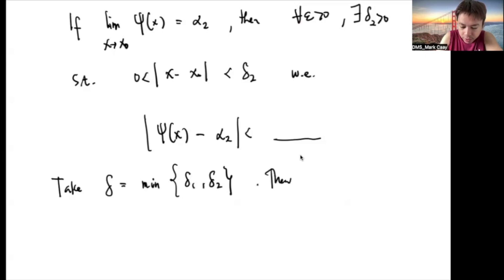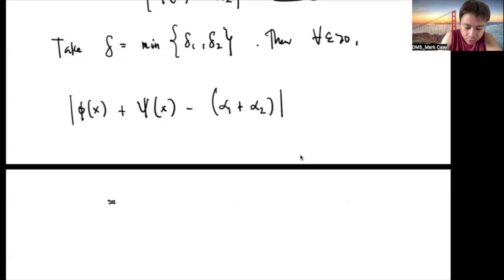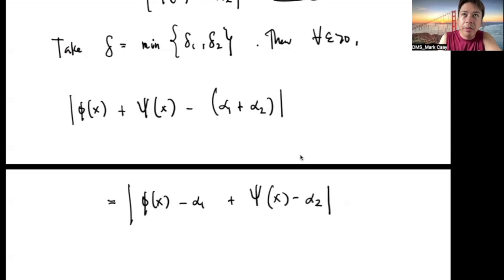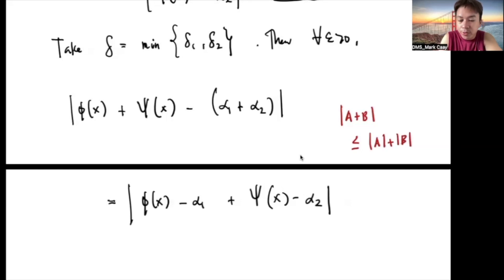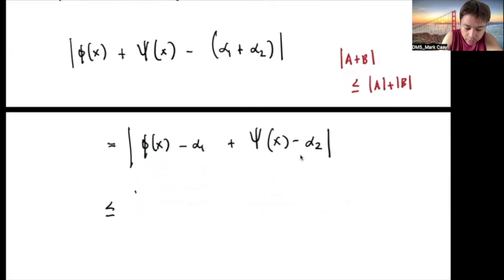For every ε > 0, let's look at |φ(x) + ψ(x) − (α₁ + α₂)|. By regrouping, this is |(φ(x) − α₁) + (ψ(x) − α₂)|. By the triangle inequality — which says |a + b| ≤ |a| + |b| — this is less than or equal to |φ(x) − α₁| + |ψ(x) − α₂|.